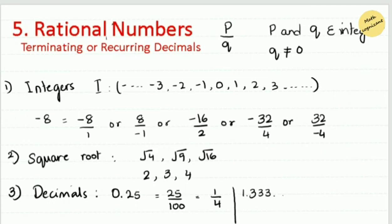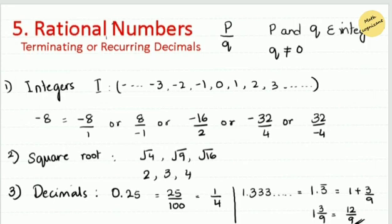Next we consider recurring decimals, where a digit repeats indefinitely. For example, 1.3̄ (1.333...) uses bar notation and can be expressed as 1 + 3/9. This gives 12/9, which simplifies to 4/3. So recurring decimals are also rational numbers.